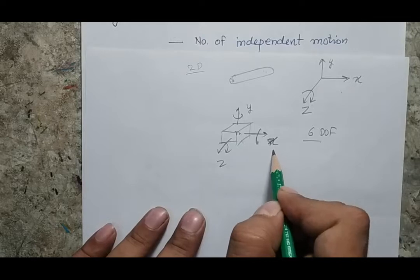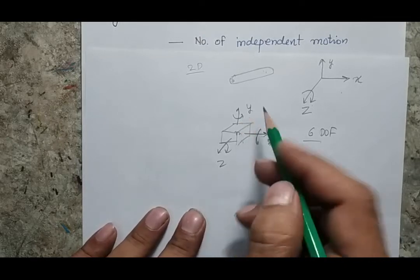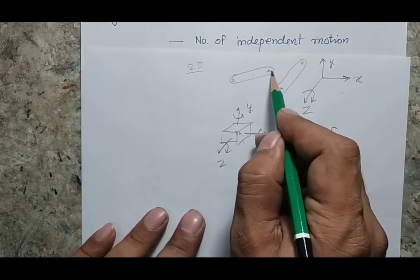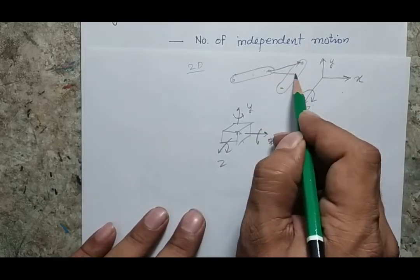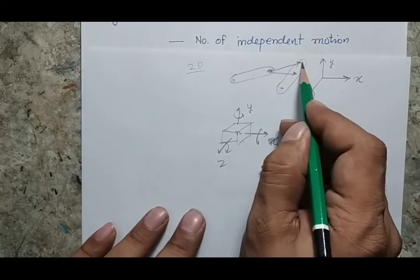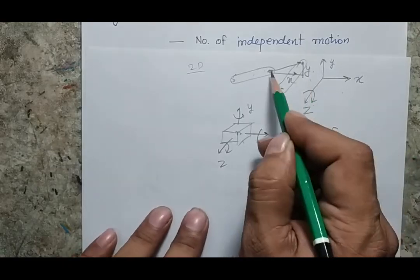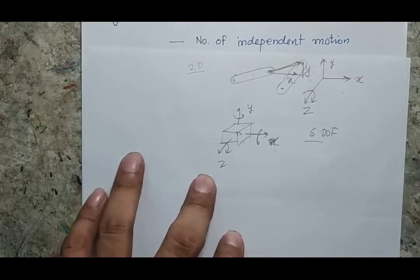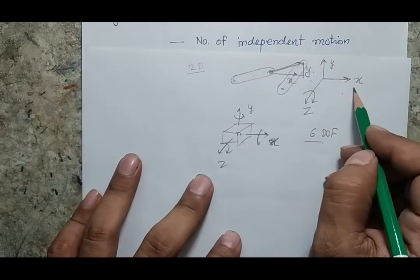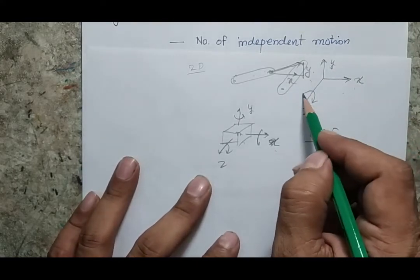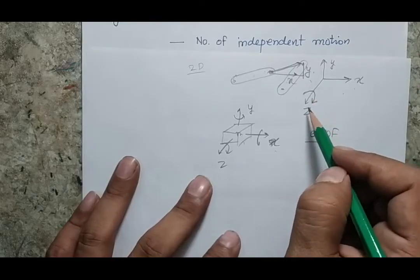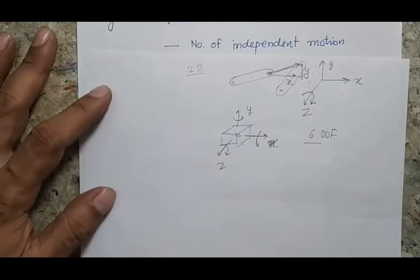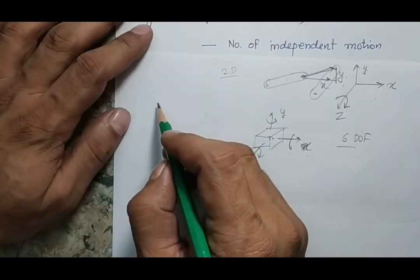These are independent motions not related to each other. Independent motion means that if I calculate the value along x, it is not possible to find a relation between the motion along x and y. Similarly, I will not be able to calculate the angular rotation of the body from the translational motions. These three are independent motions not linked to each other, and therefore we say the body has three degrees of freedom.